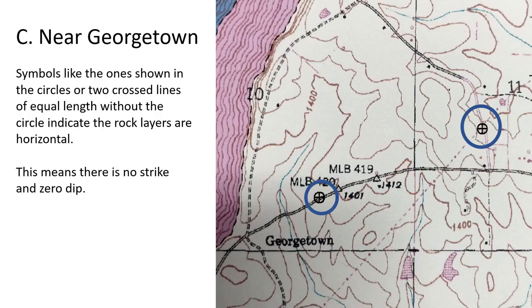The last location near Georgetown is an easy one. You can see two crossed lines inside of circles on the map. These indicate the rock layers are horizontal. This means there is no strike and zero dip.